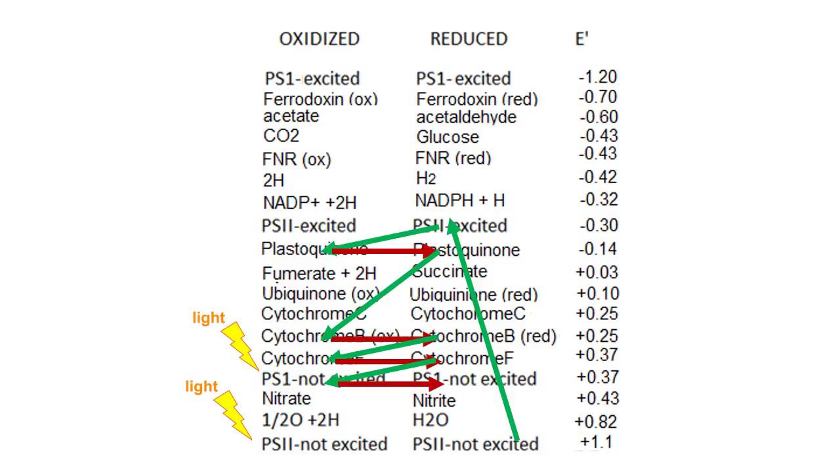Photosystem I is now in the excited state and we can follow this electron all the way down to the final electron acceptor, NADP, to form NADPH.